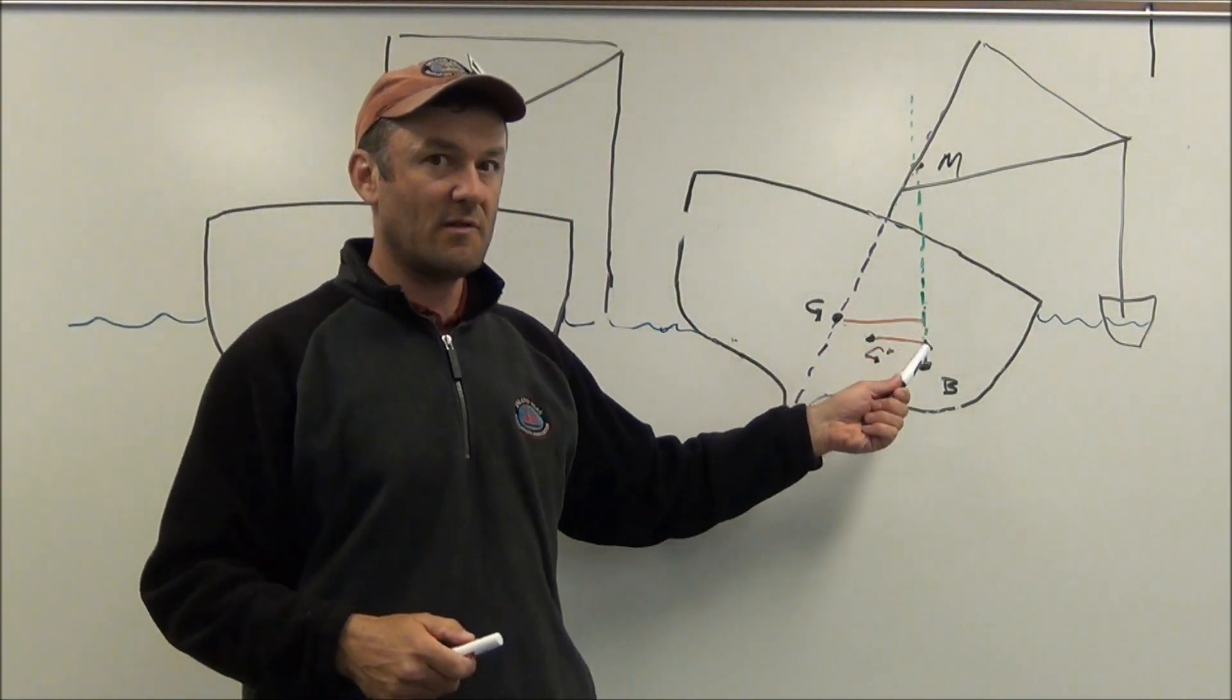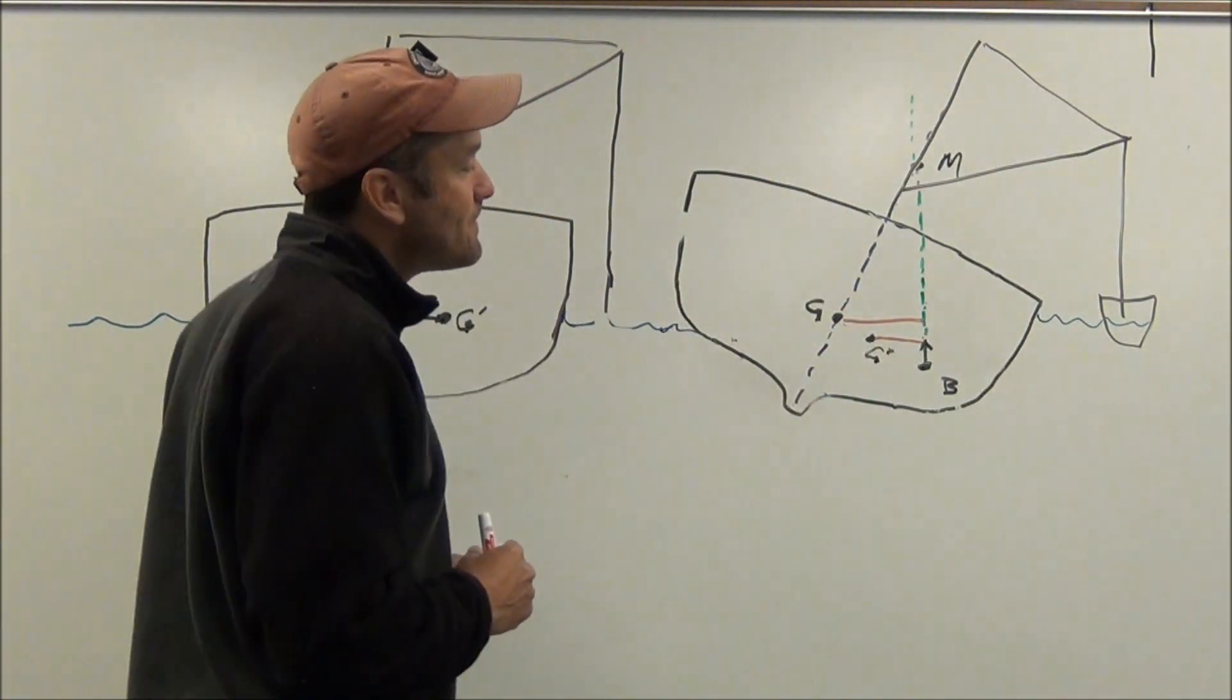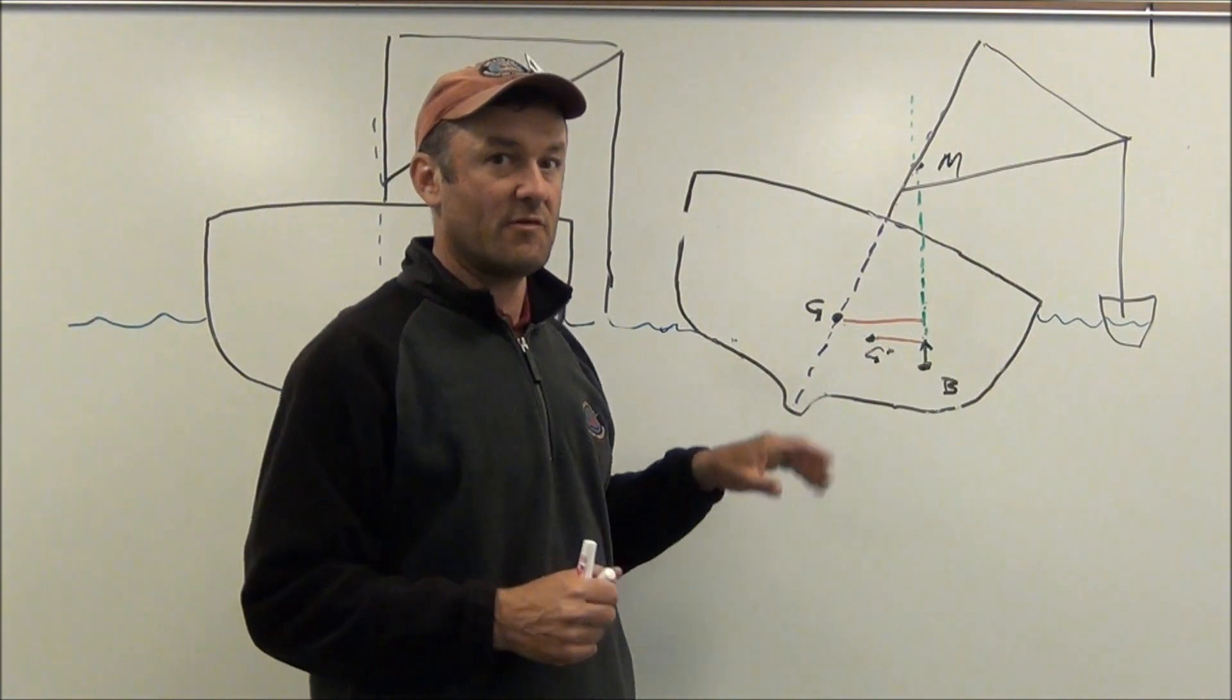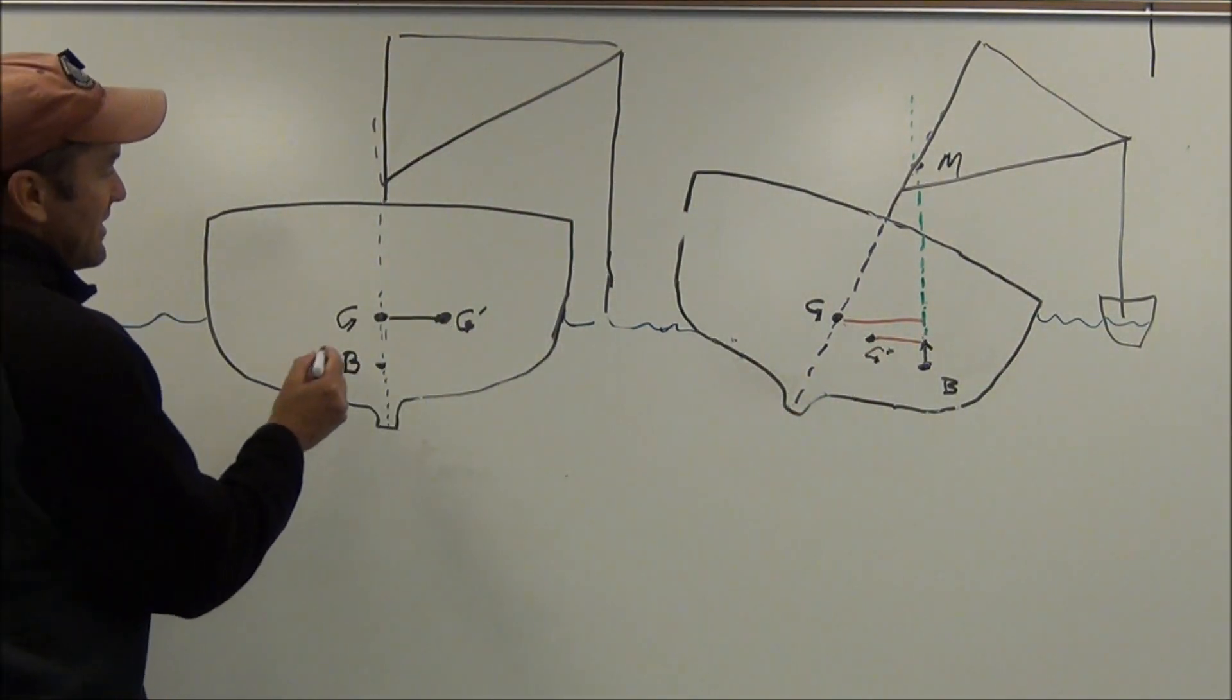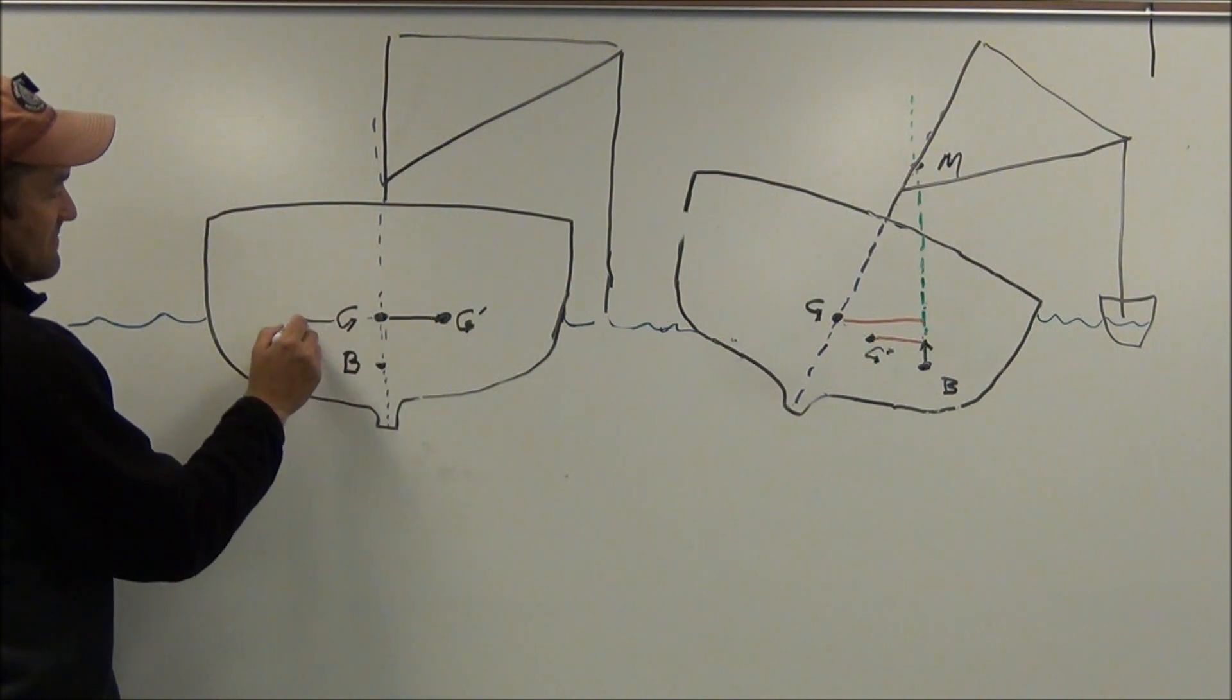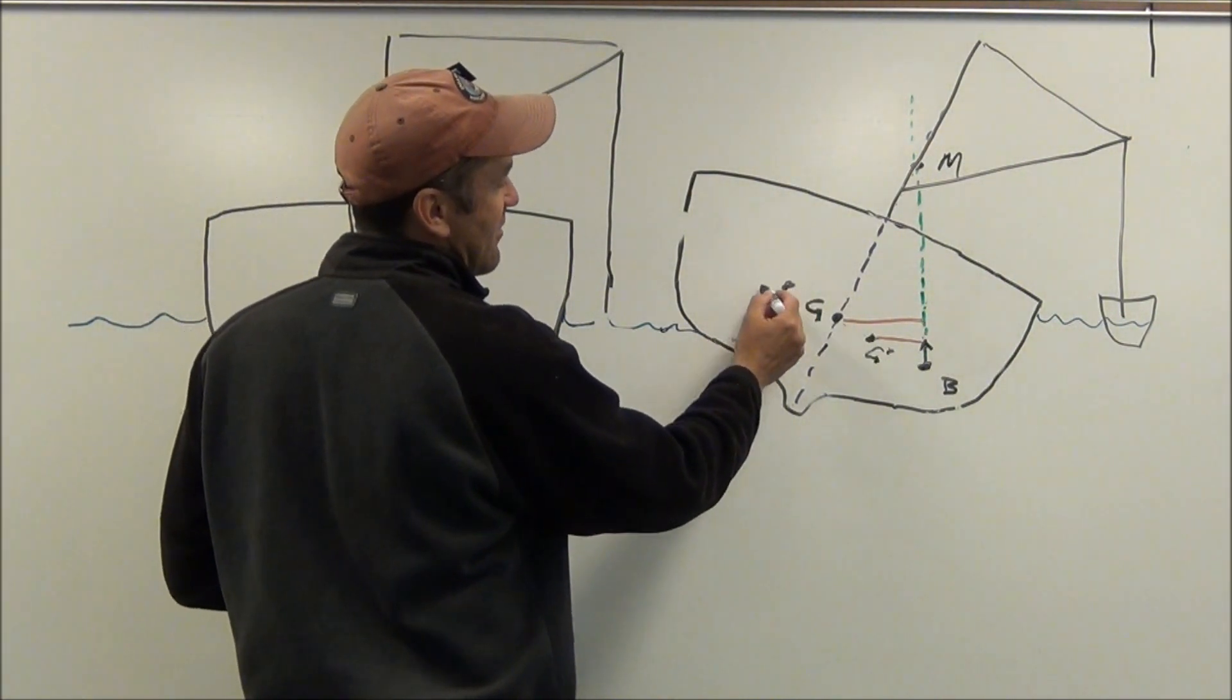So the buoyancy is going to be having less pressure to try to right the vessel, or I should say a shorter righting arm to right the vessel. Now likewise, if we were to shift the righting arm over to the port side here and we had a wind causing it to heal, that could increase the righting arm.